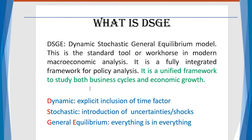The acronym DSGE is formed from four elements: Dynamic — meaning the explicit inclusion of the time factor; Stochastic — meaning the introduction of uncertainties or shocks, which is very important for DSGE modeling; and GE — general equilibrium — meaning that everything is interconnected. If you touch one aspect of the economy, it reverberates into the other parts of the economy.